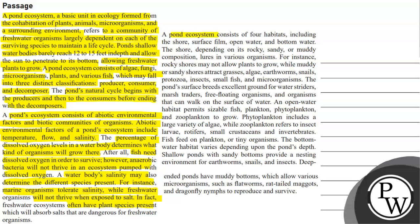A pond ecosystem consists of four habitats including the shore, surface film, open water, and bottom water. The shore, depending upon its rocky, sandy, and muddy composition, supports various organisms. For instance, rocky shores may not allow plants to grow, while muddy or sandy shores attract grasses, algae, earthworms, snails, protozoa, insects, small fish, and microorganisms.